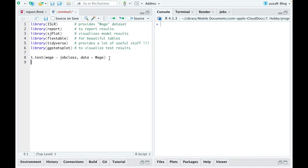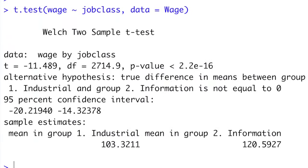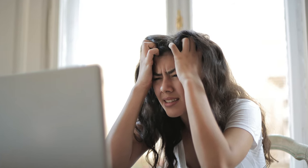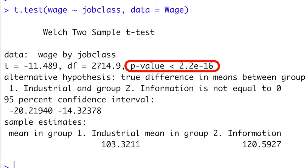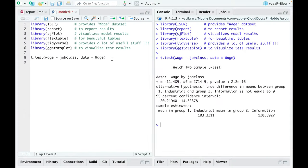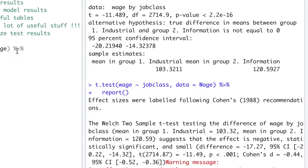So let's start with a simple t-test. The usual output of a t-test is not really appealing, to say the least. And if we try to write down the results, we might end up reporting only the p-value. However, if we add only one word to this code, we'll get so much more.